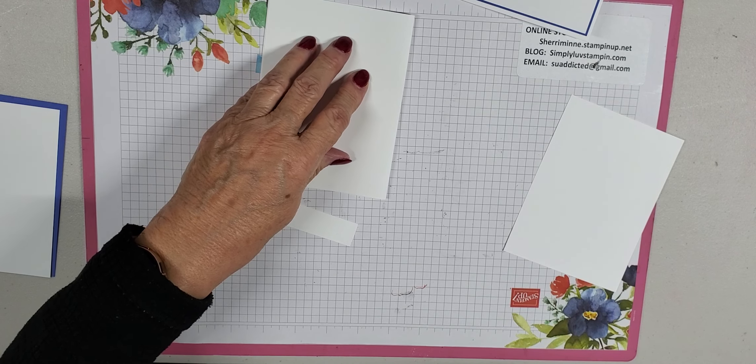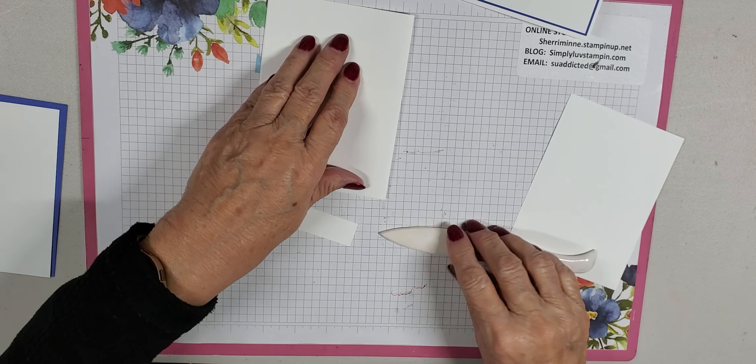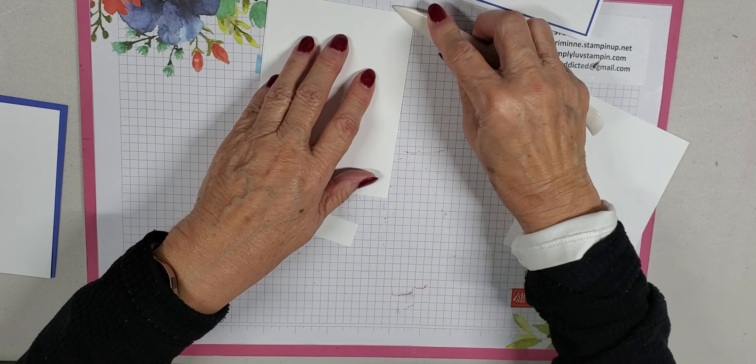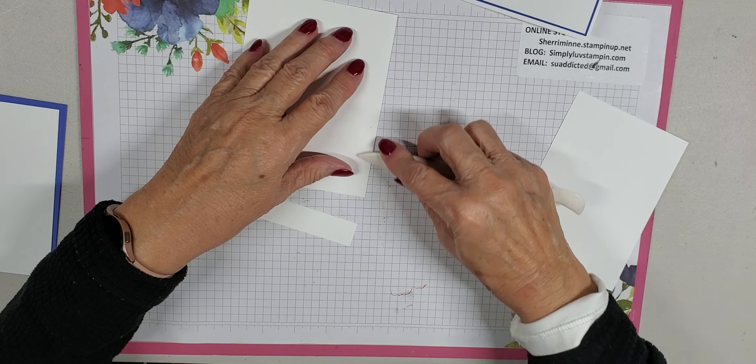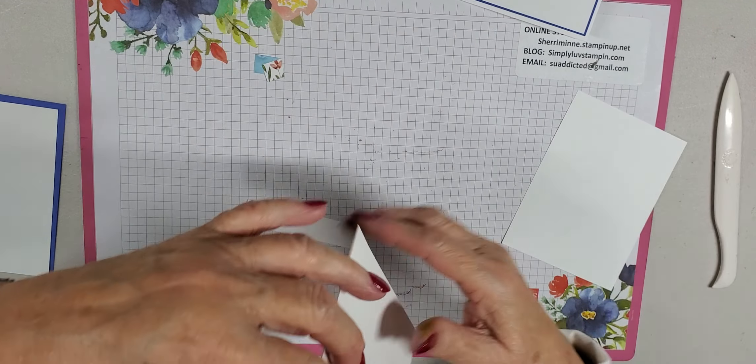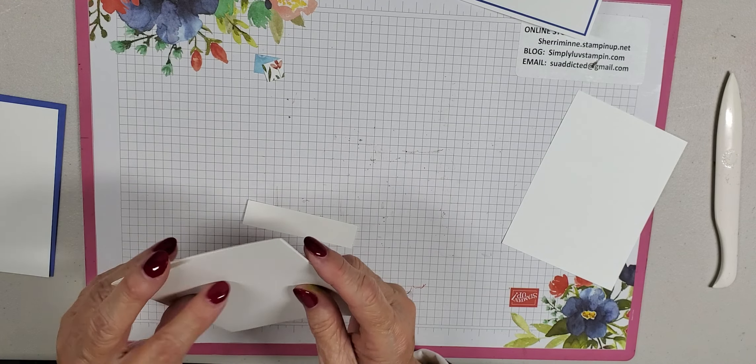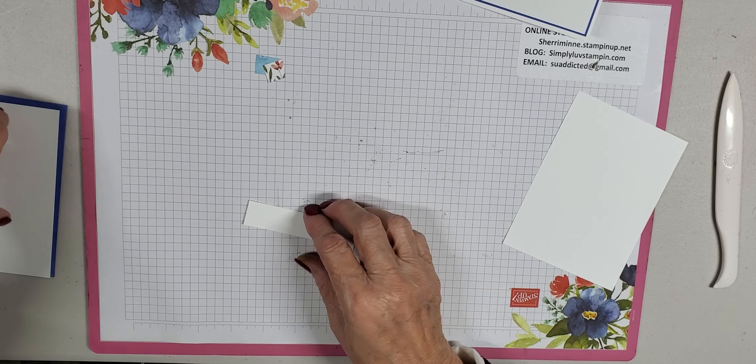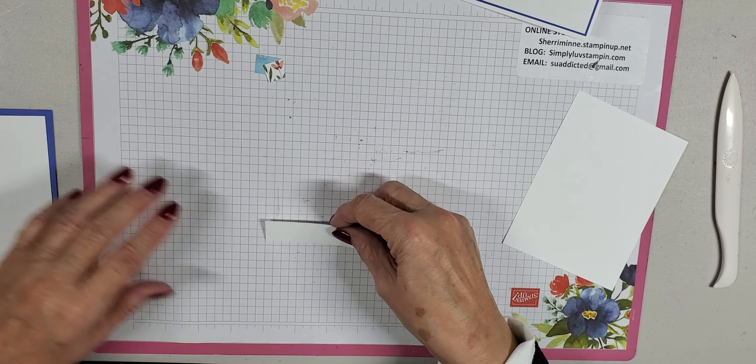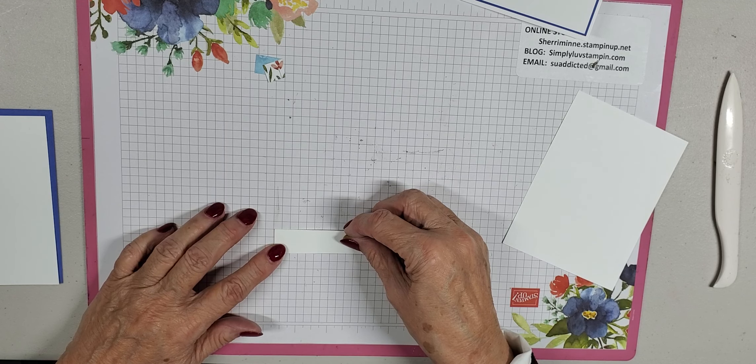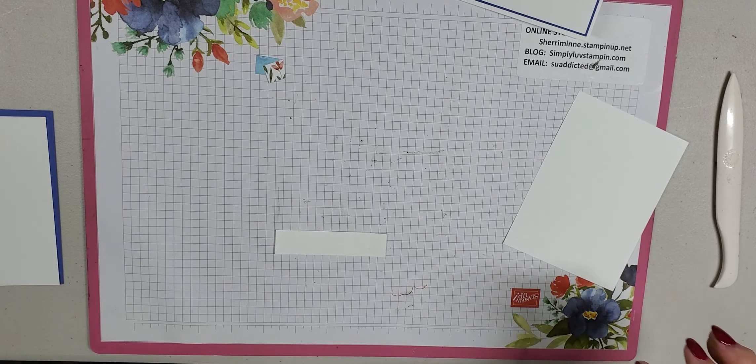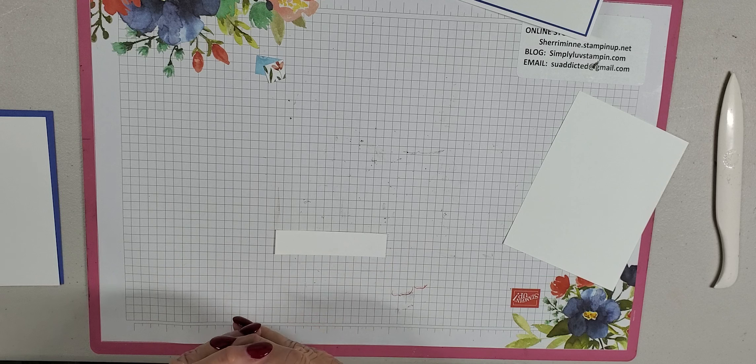So let's get started here. First thing we'll do is fold our card base. I score all of my card bases so that I can get a nice flat fold in the middle.